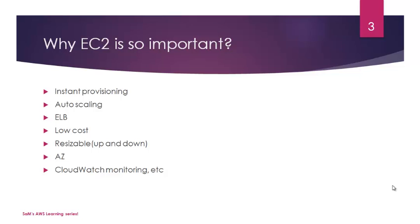ELB stands for Elastic Load Balancing — you can incorporate load balancing technologies with EC2 instances on the cloud at low cost. You get to scale up and scale down within minutes. There is also freedom of selecting your own availability zone — you can put an EC2 instance on any availability zone per Amazon. CloudWatch monitoring provides a dashboard feature where you can monitor your EC2 instance resources, drill down to CPU utilization, disk usage, and so on.